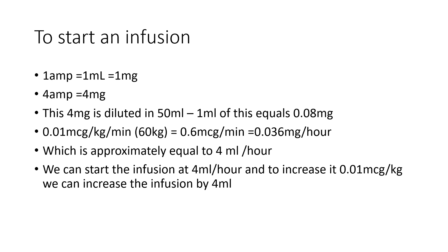For a double-strength dilution via central line, use 8 ampules (8 mg) diluted in 50 ml. In this case, the starting rate for 0.01 microgram per kg per minute in a 60 kg person would be 2 ml per hour rather than 4 ml per hour.